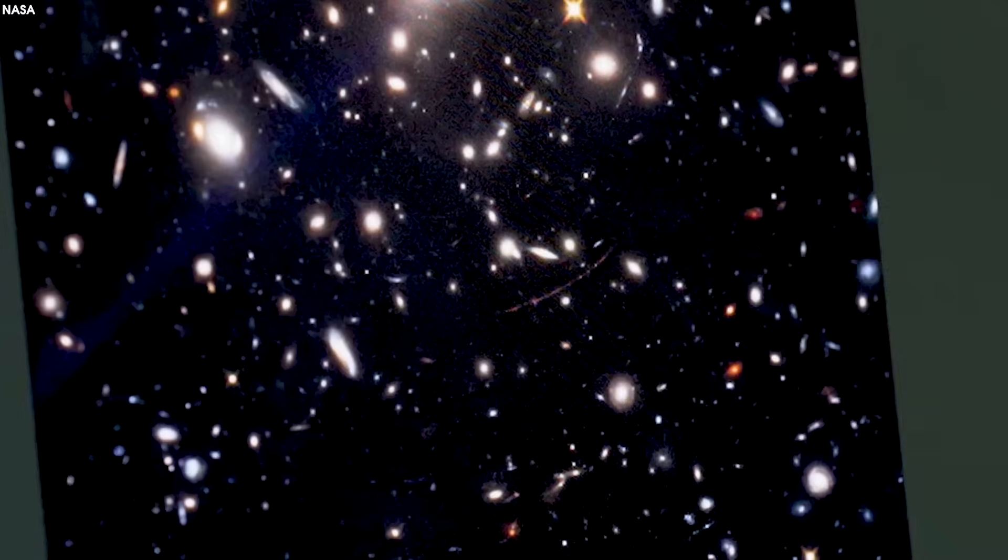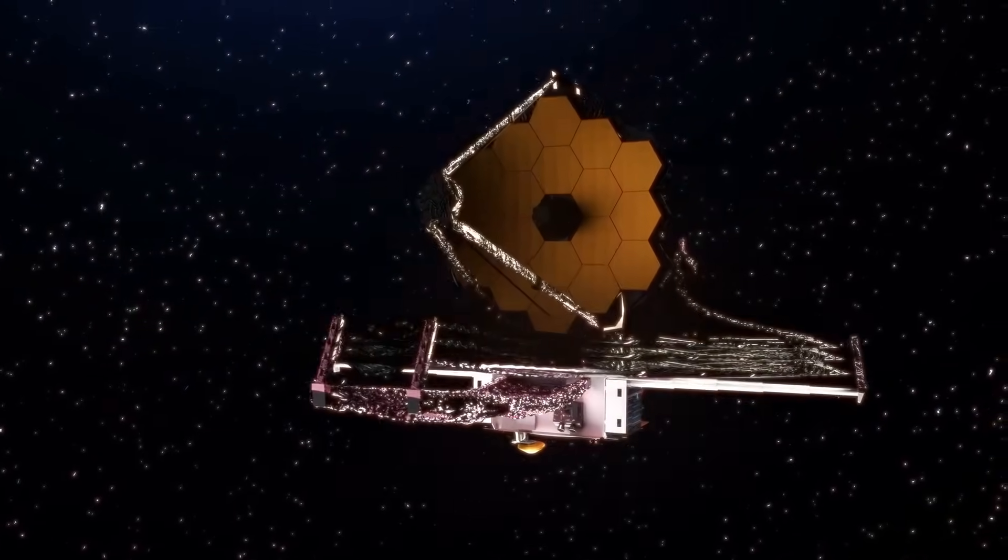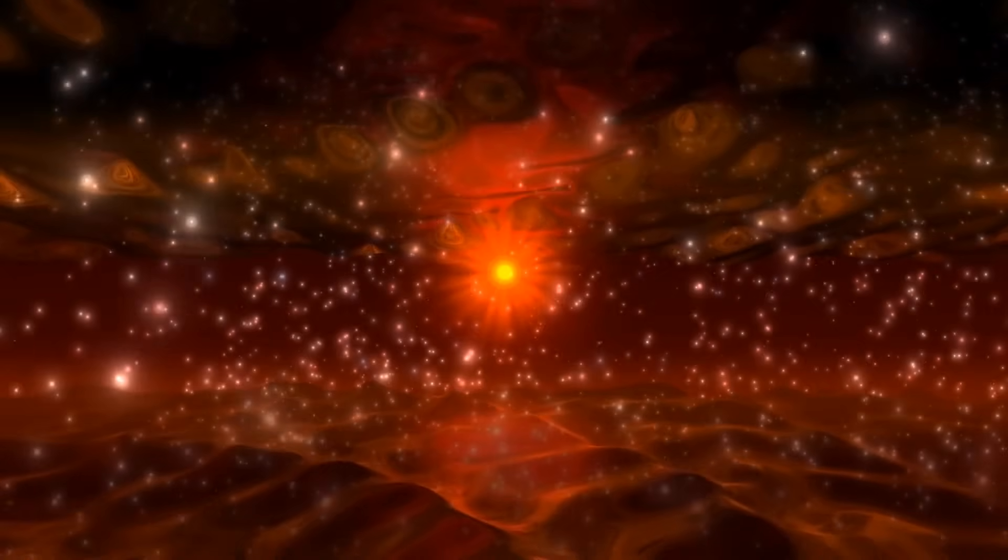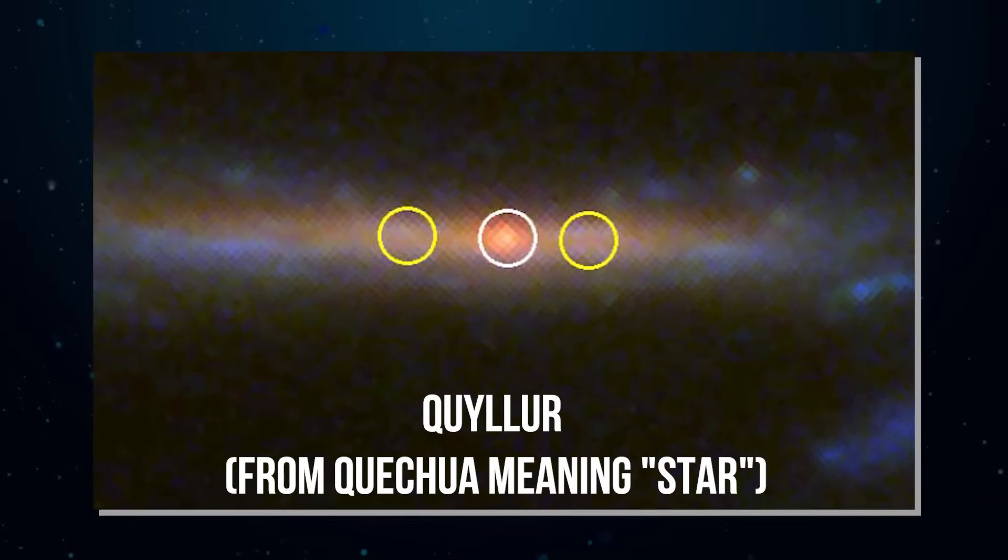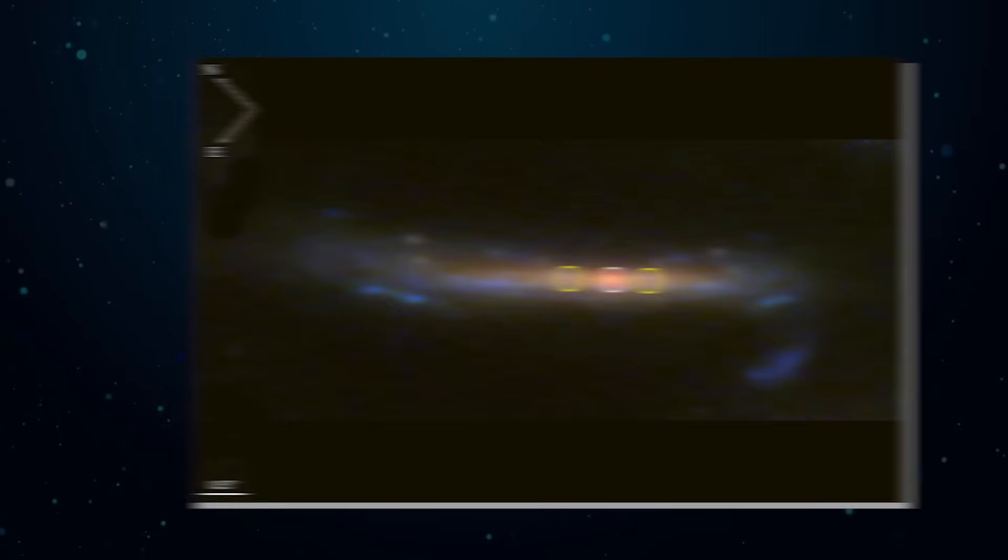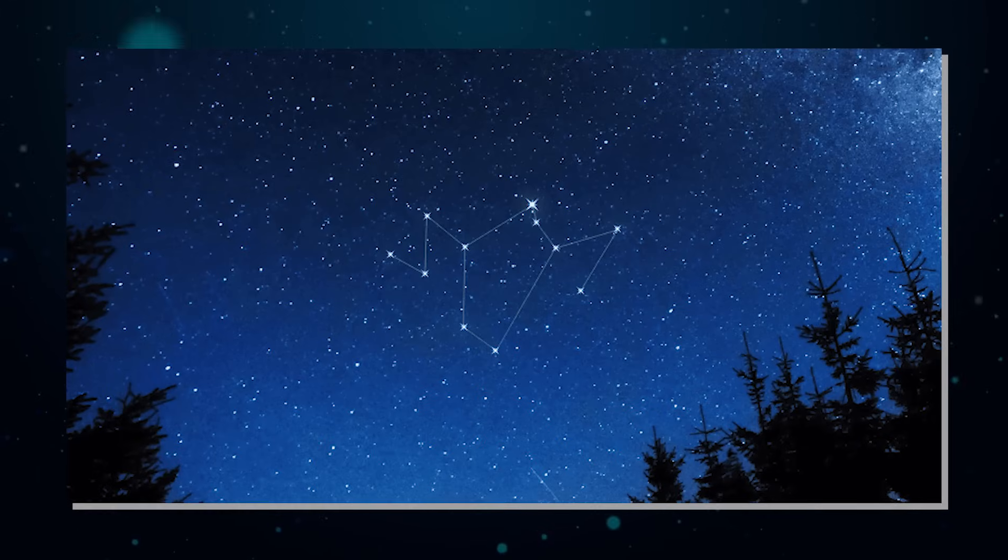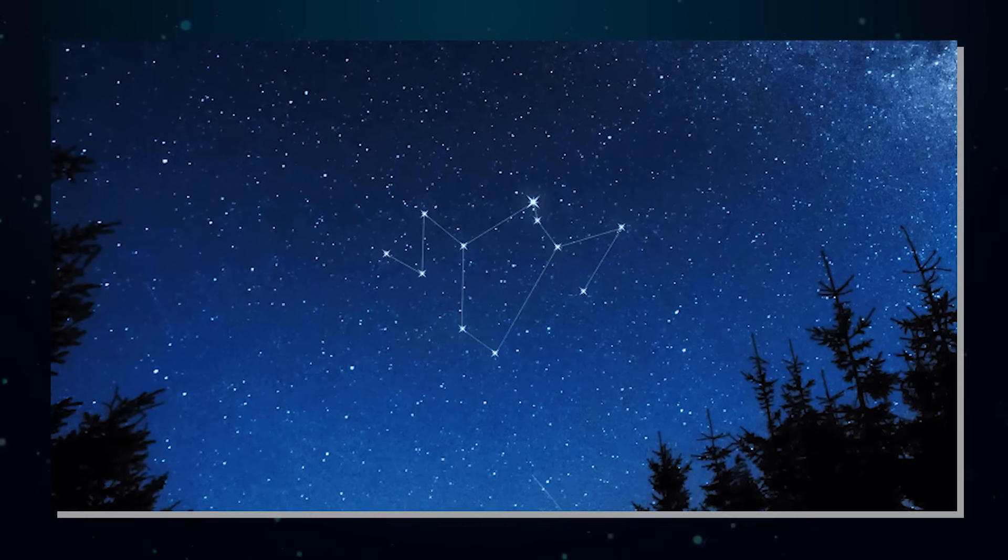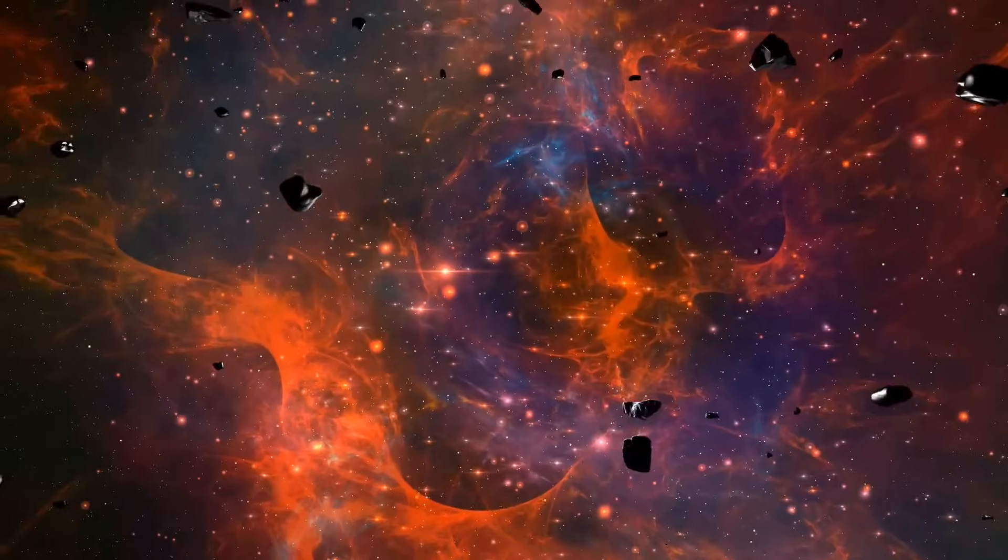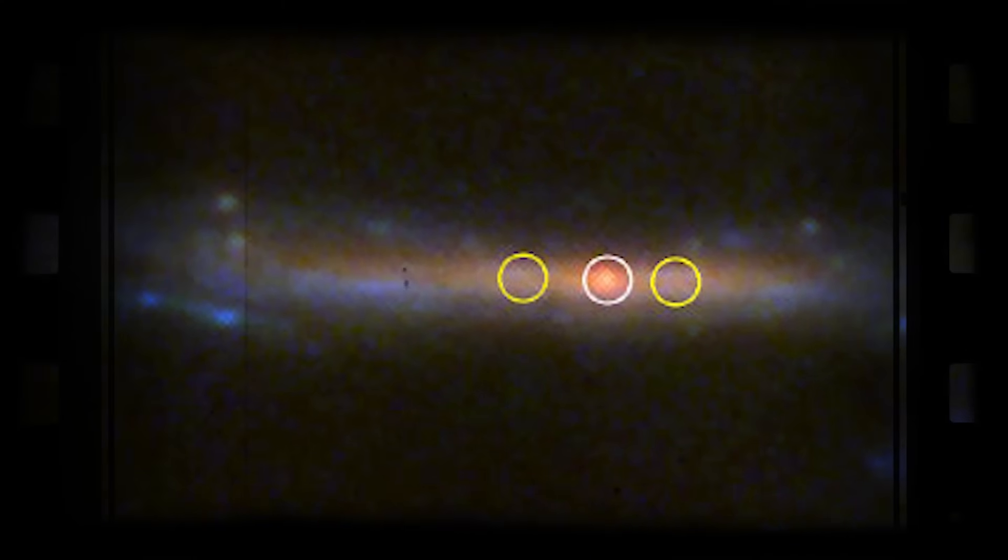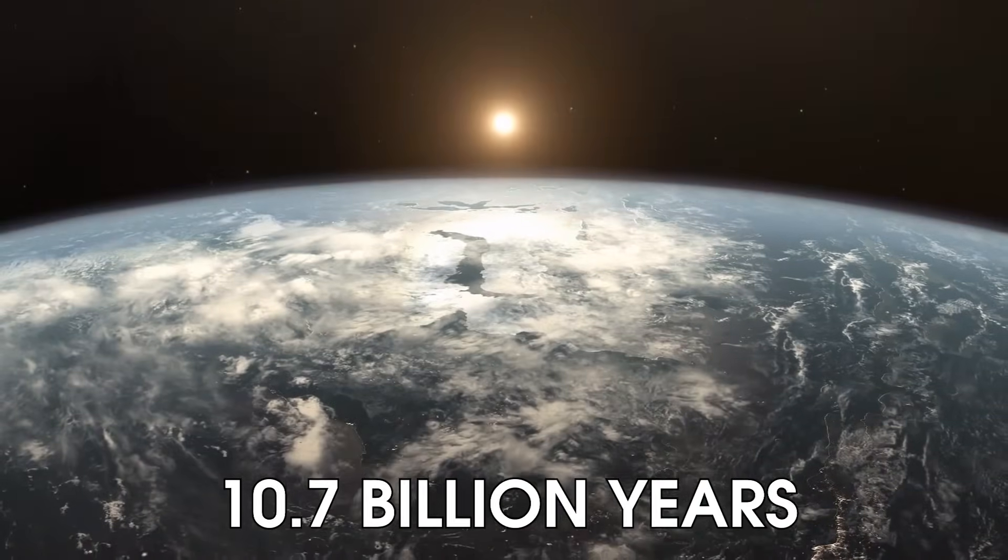Earendel is not the only distant star that Webb has studied. In 2023, the James Webb Space Telescope discovered the first isolated red giant star at a distance greater than 1 billion light-years from Earth. Nicknamed Quyllur from Quechua, meaning star, this red giant star is located in the El Gordo Galaxy cluster, which is over 7 billion light-years away, in the Phoenix constellation. Quyllur was observed 3 billion years after the Big Bang. At that time, Quyllur was a colossal red giant that had traveled through space for 10.7 billion years to reach Earth.